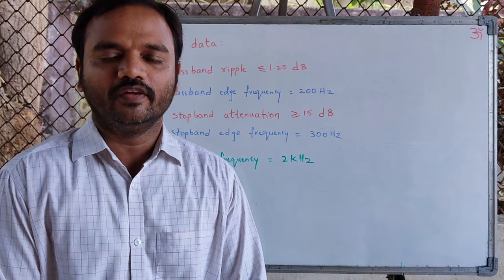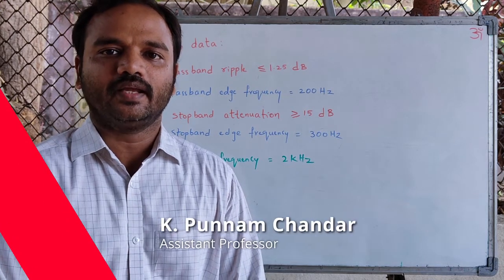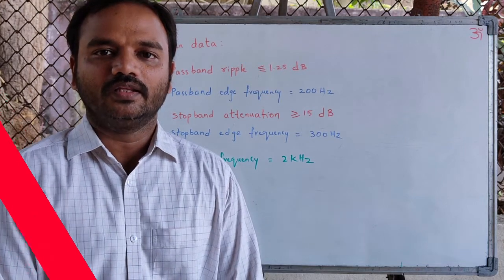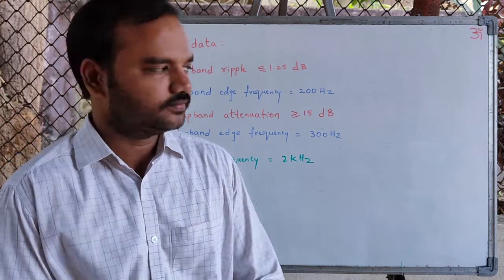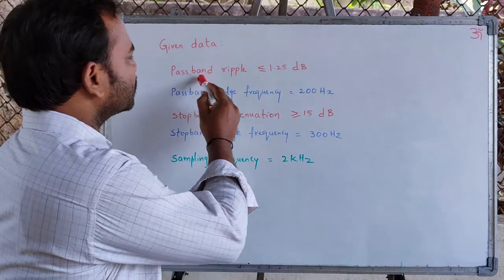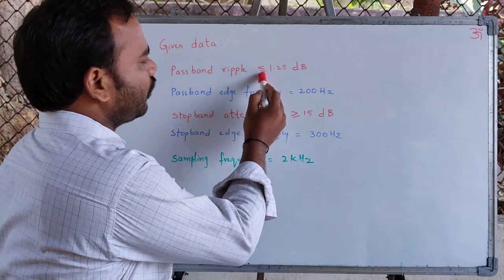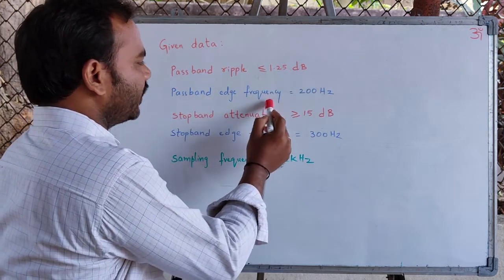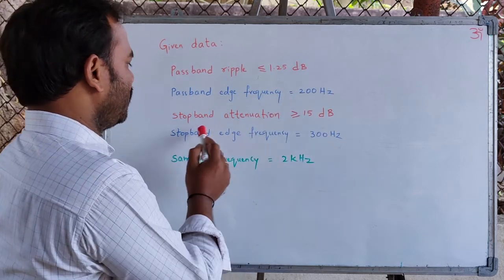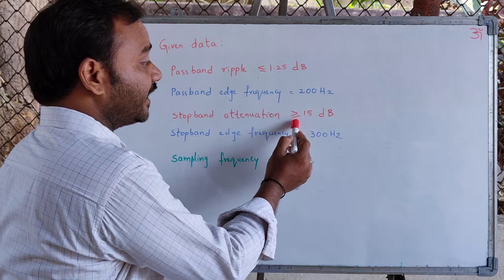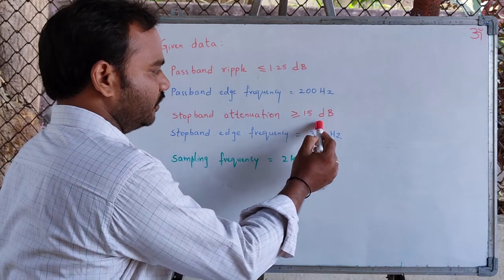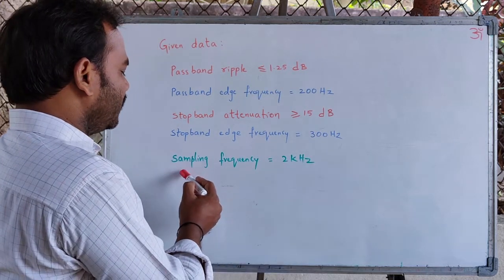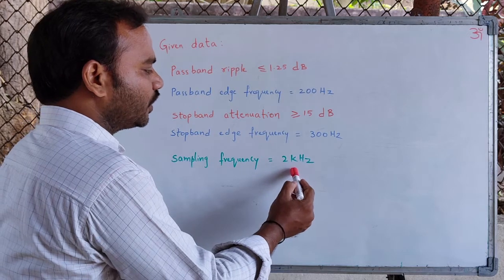In this video lecture, we will learn how to design a digital low-pass filter from the given digital specifications. The given specifications are: passband ripple is less than or equal to 1.25dB at a passband edge frequency of 200Hz. Stopband attenuation is greater than or equal to 15dB at a stopband edge frequency of 300Hz. The sampling frequency is 2kHz.